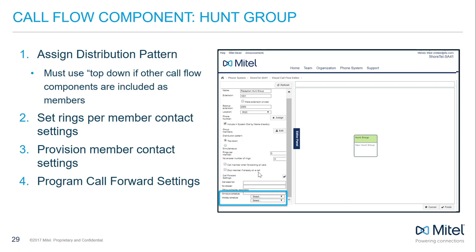Choose the existing on-hour schedule from the drop-down menu and assign one to the hunt group. You'll also be able to do the same with the holiday schedule. For hunt groups, there is a new custom schedule option, and you can differentiate hunt group call routing by on-hours, off-hours, and holiday schedule. Click Finish to save the hunt group.